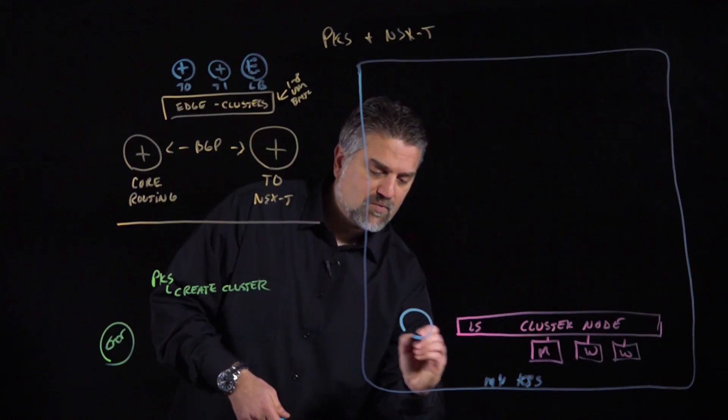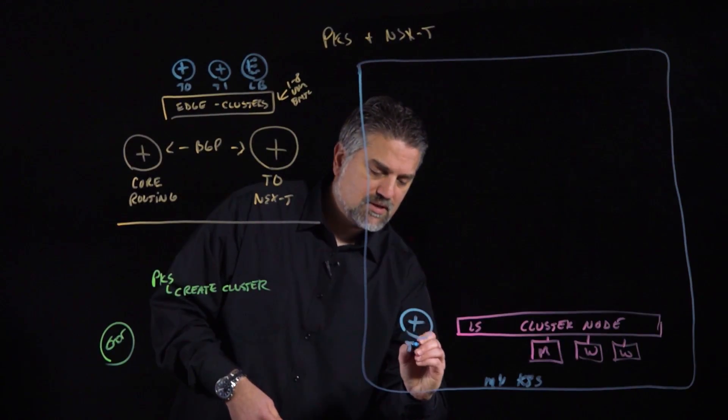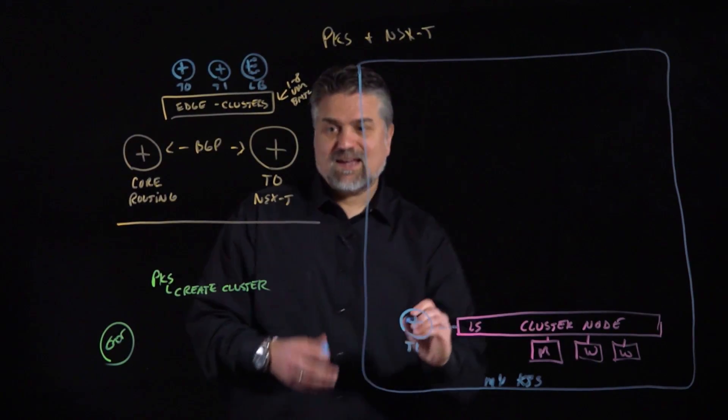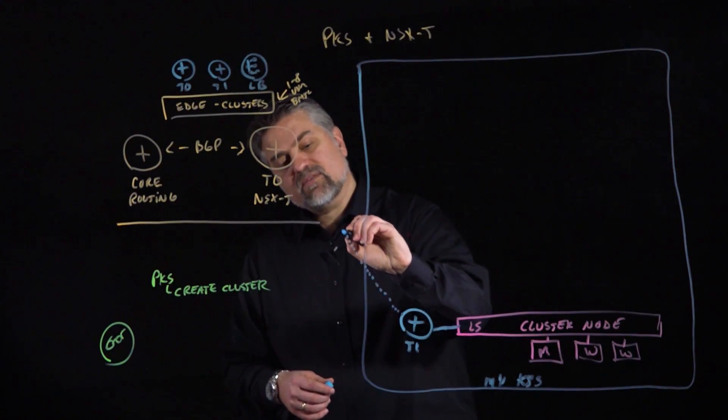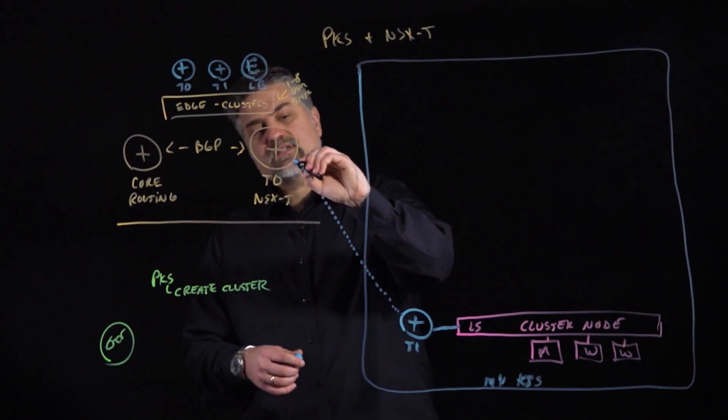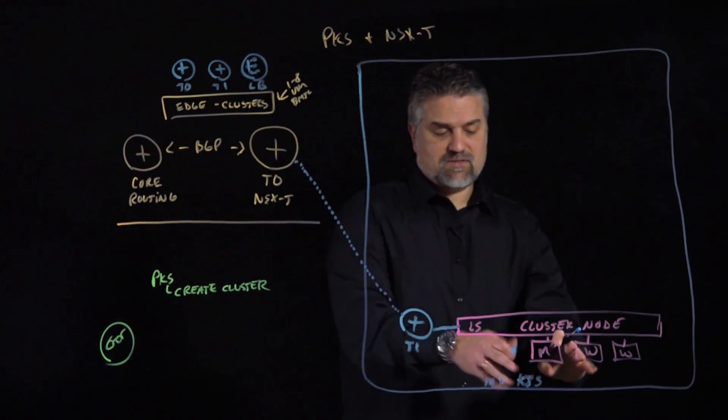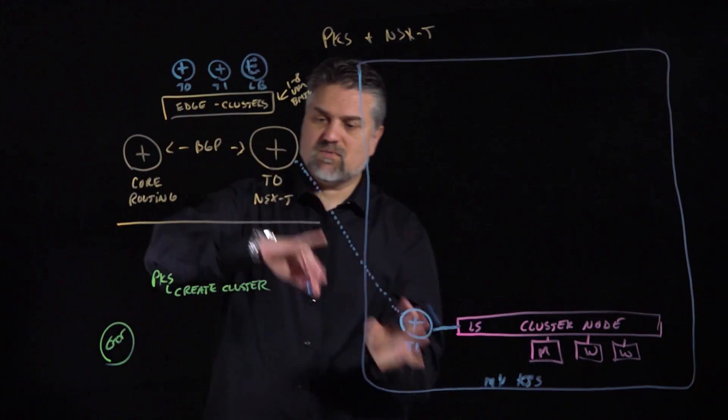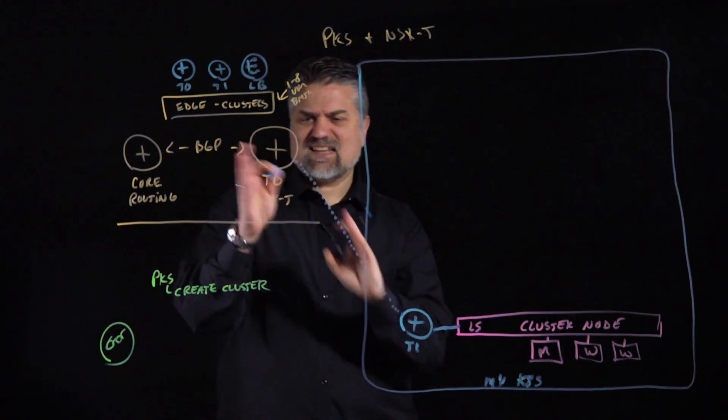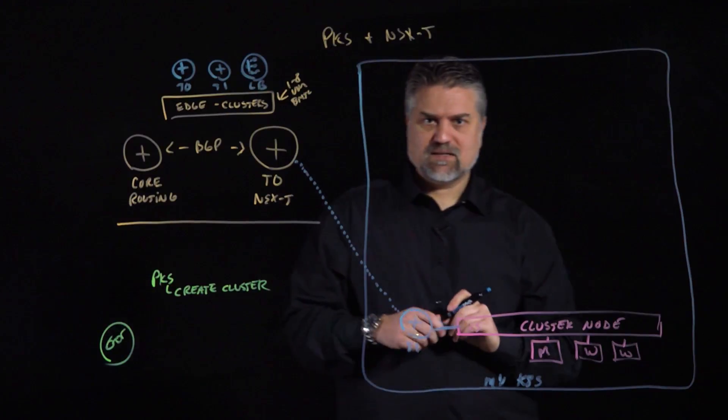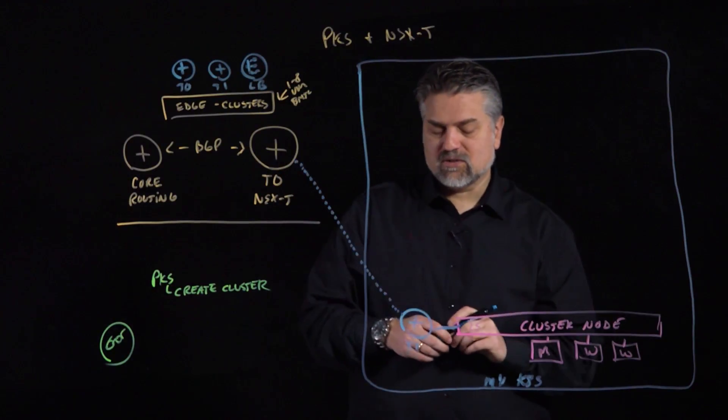It's its own subnet routing to this logical switch. We'll also have its own T1 router associated with it. And that T1 will actually link via a dynamic routing protocol to our T0. So this is how we get access into our master node through our T1, T0 infrastructure. We can do all things like NAT services, SNAT and DNAT and load balancing from here. We're going to talk a little more about load balancing in a minute.